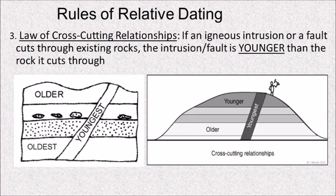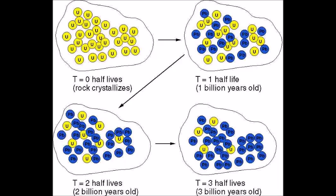Relative dating is a method of giving materials dates by putting them in relative chronological order. There are no definitive dates associated with relative dating methods, but those dates can be gleaned through absolute dating methods, such as radiometric dating or dendrochronology.